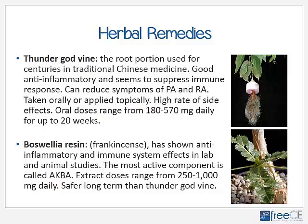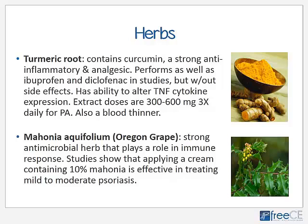Another decent herbal remedy is boswellia resin, also known as frankincense, which has shown good anti-inflammatory and immune system effects in lab and animal studies. The most effective component is called AKBA, and extract doses range from 250 to 1000 milligrams daily. Compared to thunder god vine, it is a much safer herb to use long-term.